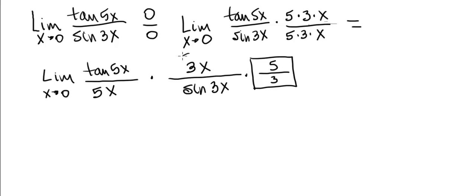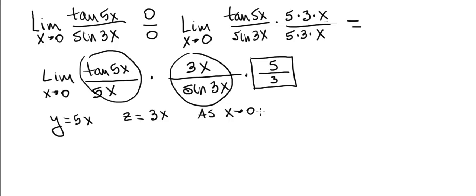Let's look at the two things that I'm circling. Let y equal 5x and let z equal 3x. As x goes to 0, clearly 5x goes to 0, so y goes to 0, and of course 3x also goes to 0, so z goes to 0.